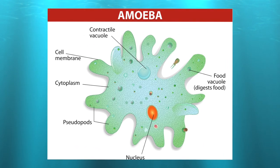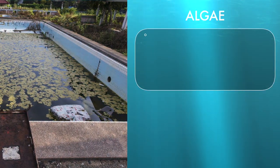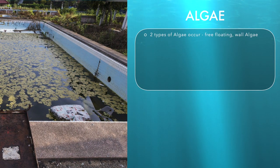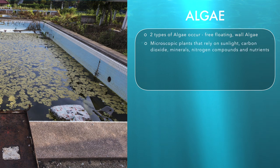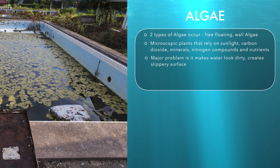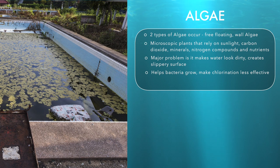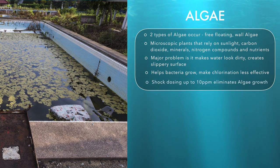There are two types of algae that occur in swimming pools: free-floating and wall algae. All algae are microscopic plants that rely on sunlight, carbon dioxide, minerals, nitrogen compounds and nutrients to grow. The major problem with algae is it makes the water look dirty and creates slippery surfaces which can cause accidents around the pool. Algae can also help bacteria grow and make chlorination a less effective disinfectant. Shock dosing up to 10 parts per million will eliminate algae growth.